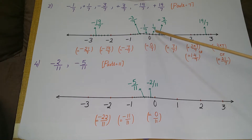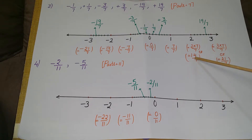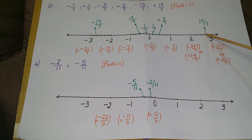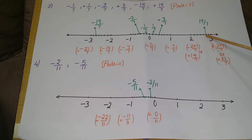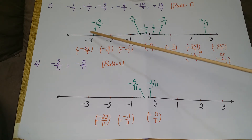Next, 3/7 — count from 0: 1, 2, this is the third one, so this is 3/7. Then 19/7 — 19 comes between 14 and 21. Count from 14: 15, 16, 17, 18, 19 — so this is 19/7. On the left side, minus 3/7 and minus 19/7 are the corresponding negative positions.